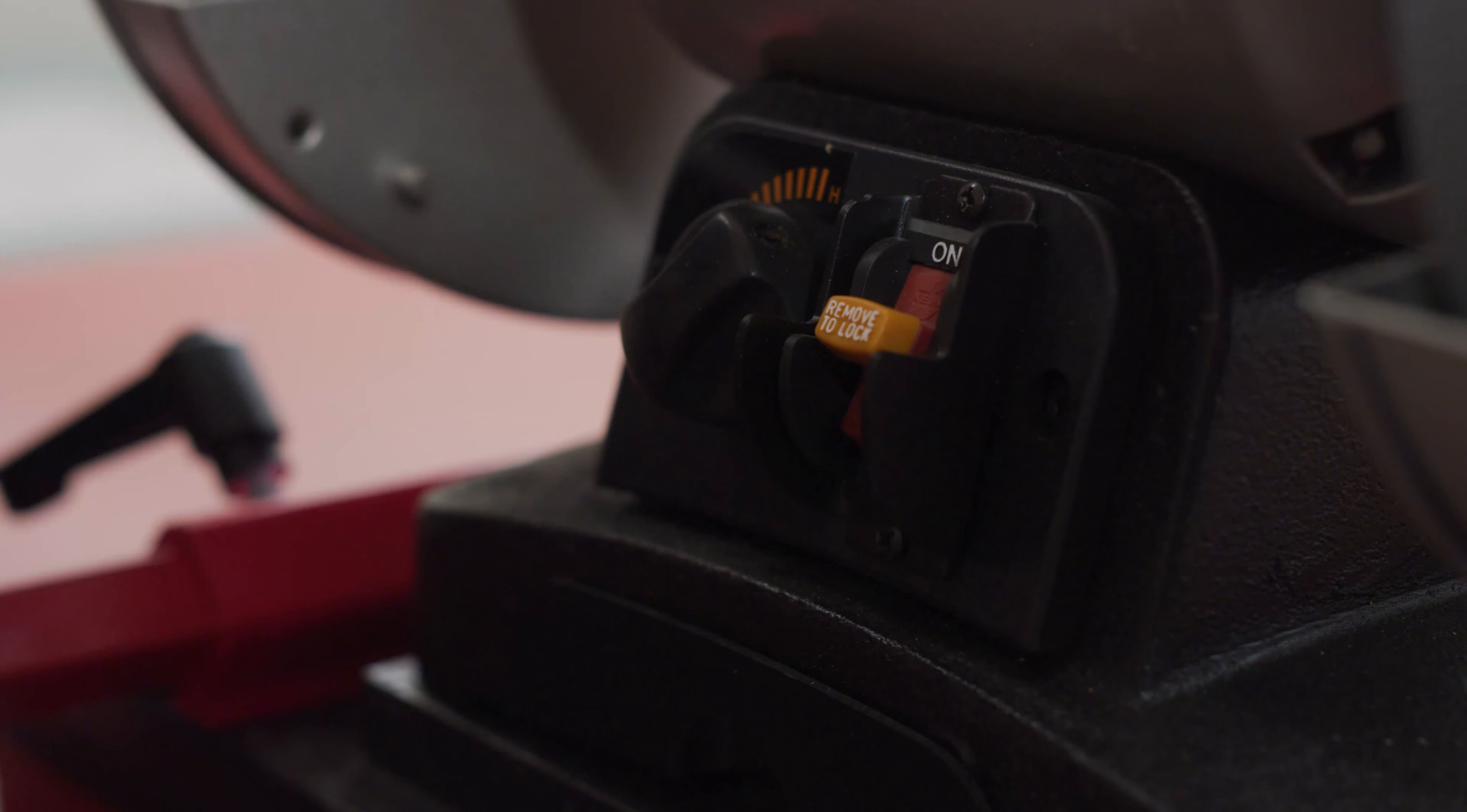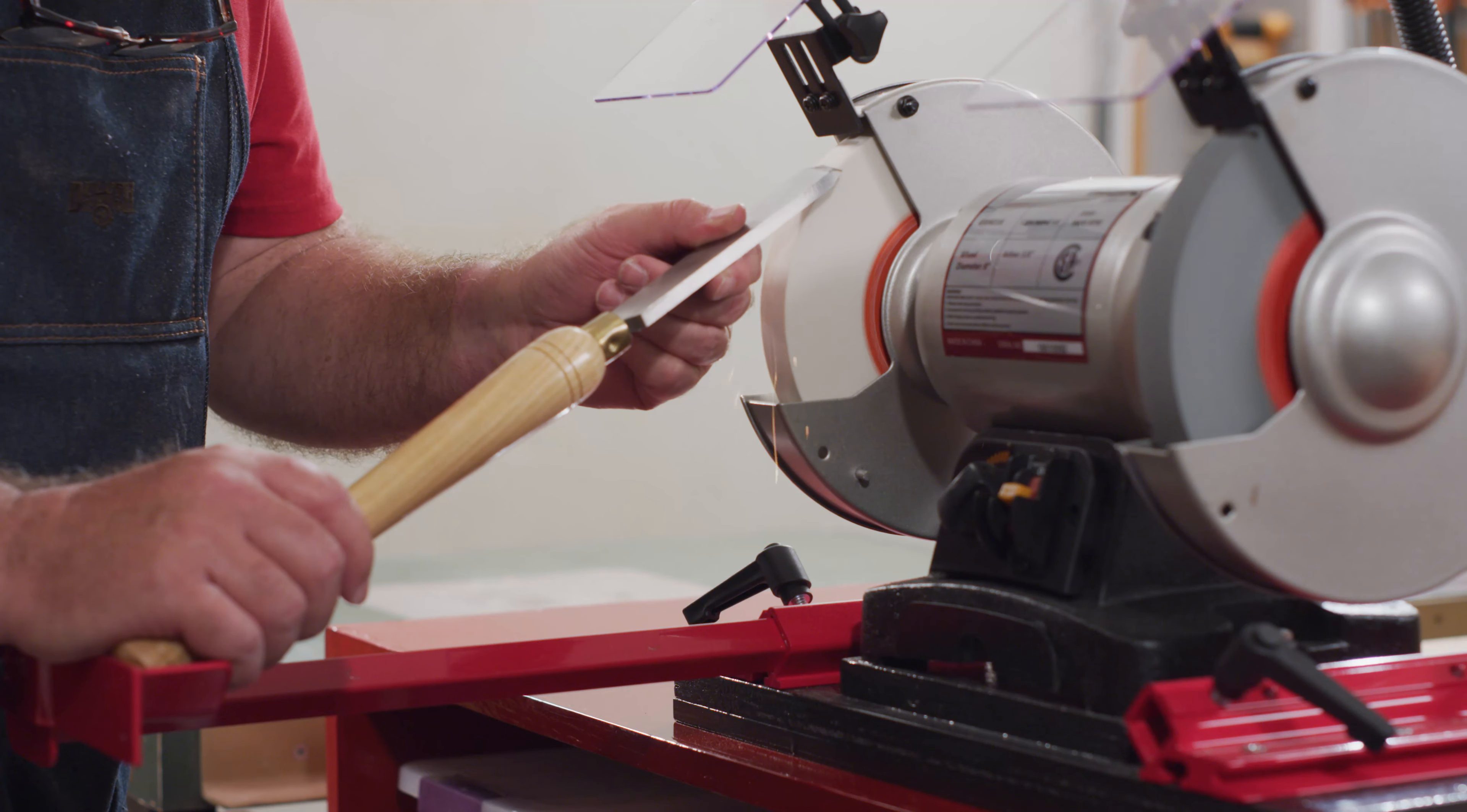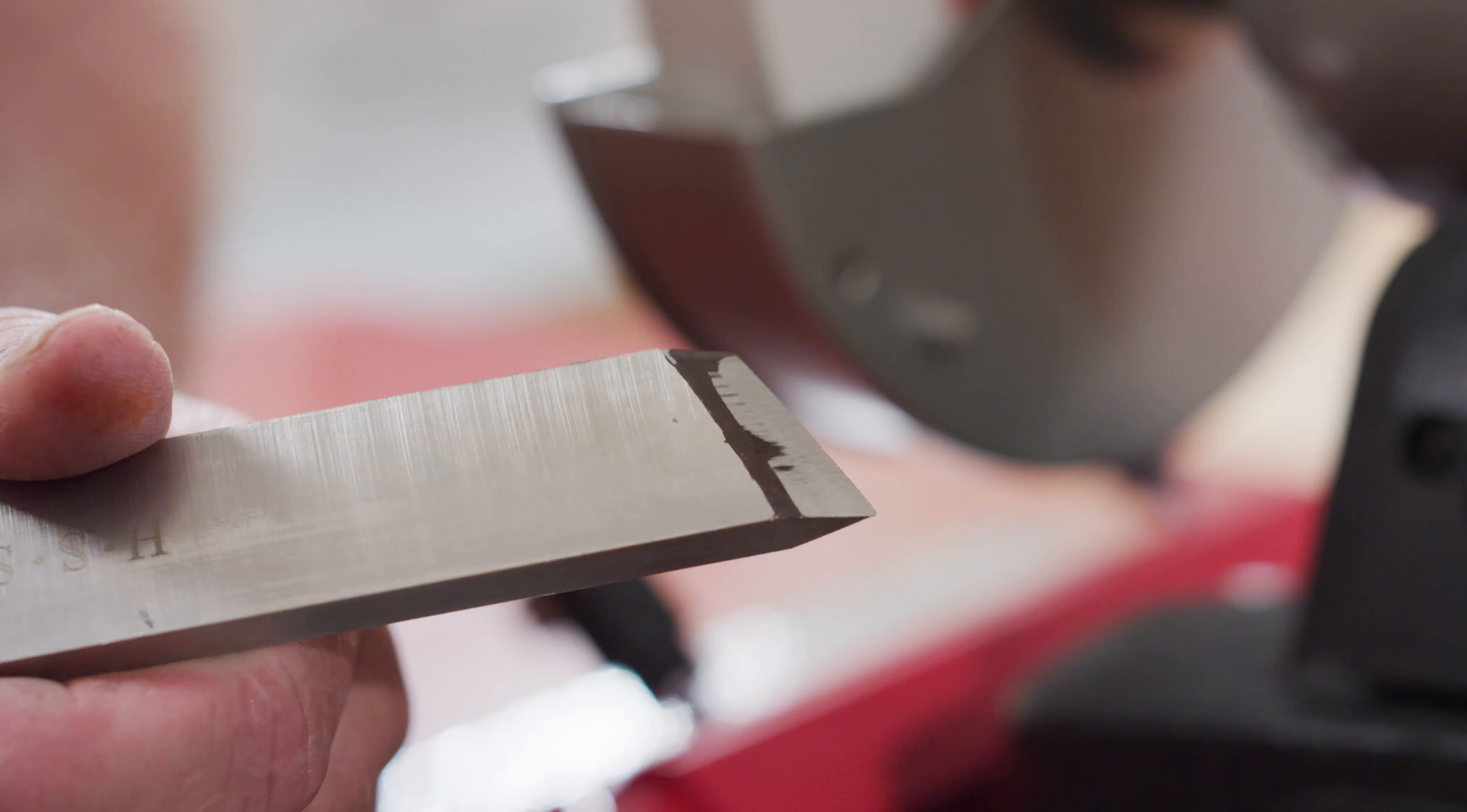Start the grinder and lightly grind one edge of the skew. Look at the cutting edge of the skew darkened with the marker to determine the angle of the beveled edge against the grinding wheel.